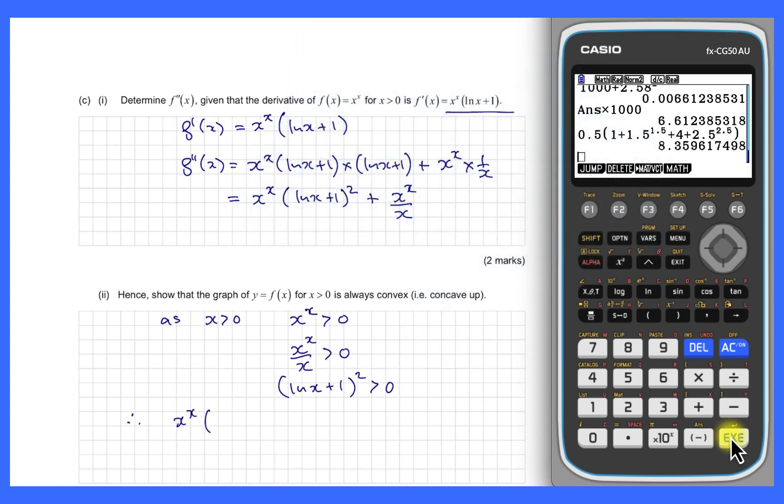And we also know, in fact it's always true, that ln x plus 1 all squared is greater than 0. So we can confidently say that x to the x, which is positive, times by ln x plus 1 all squared, which is positive, plus another positive thing, x to the x on x, that must be all greater than 0. Therefore f double dash x is greater than 0, which means that it is convex.